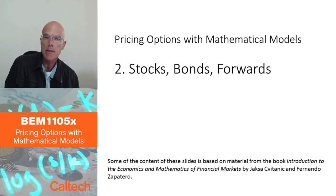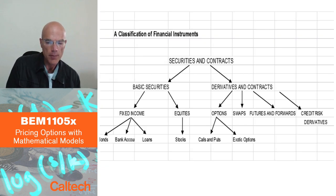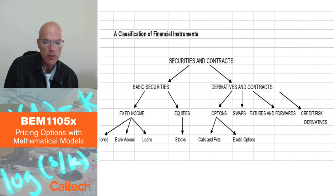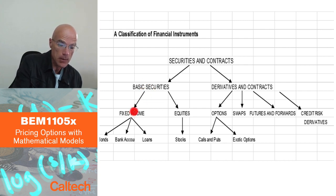Let's now define the basic securities — stocks and bonds — and also introduce the first derivative security, a very simple one, so-called forward contracts. This is a graph from the book I wrote with Professor Fernando Zapatero on this topic, and it's a possible classification of financial instruments that are traded in markets. We call them securities and contracts — by contracts meaning things like options, and by securities meaning basic securities which would be either fixed income or equities.